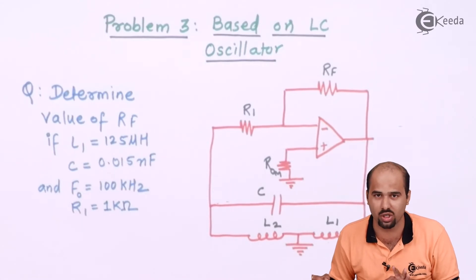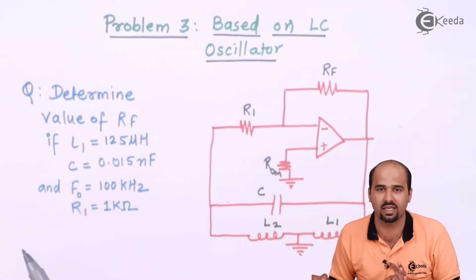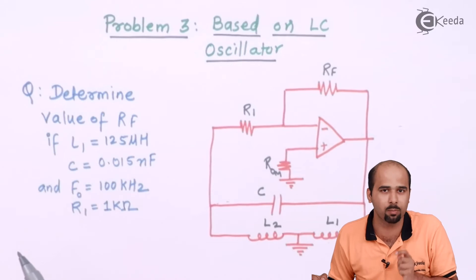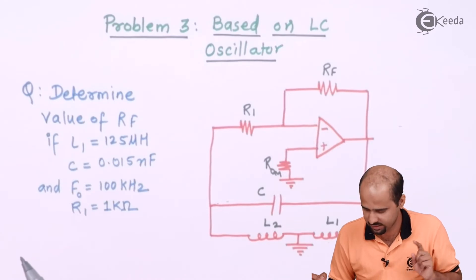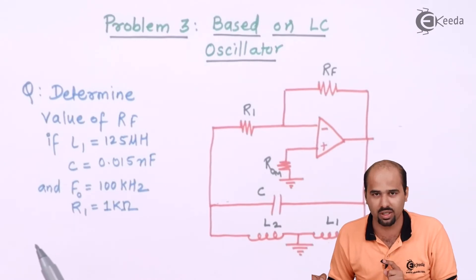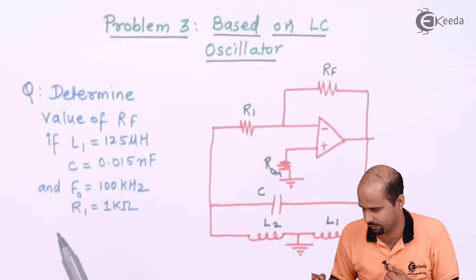But to have the sustained oscillation, I can say that the gain should be having that particular value which is determined by that particular type of oscillator, right? Then once we get that particular gain, first of all, if that will be ratio of C1, C2, L1, L2, whatever,